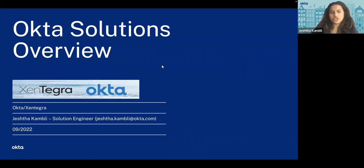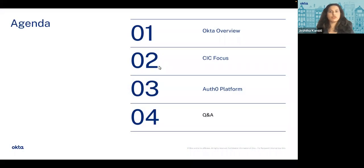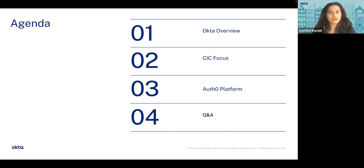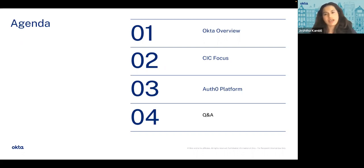For today's session, the overall agenda is to give a quick overview of the Okta portfolio, which primarily consists of workforce as well as customer identity access management. The next part of the session will mainly focus on the customer identity cloud, which is where the CIAM piece rolls in. CIAM is the Customer Identity Access Management, and we have a product called Auth0. I'll show a quick 10-minute demo of how you can work through the platform. Please feel free to interrupt with questions — let's make this as interactive as possible.